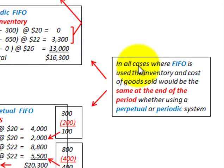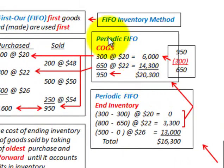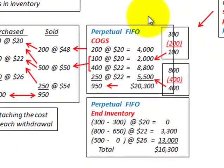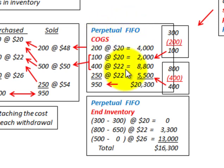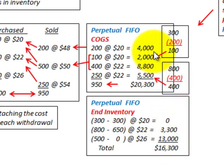Let's look at the key takeaway: in all cases where FIFO is used, the inventory and cost of goods sold are the same at the end of the period whether using the perpetual or periodic method. For periodic FIFO we had $20,300 for cost of goods sold and $16,300 for ending inventory — which matches exactly our perpetual FIFO results of $20,300 cost of goods sold and $16,300 ending inventory. That takes care of FIFO inventory accounting using both the periodic and perpetual methods.